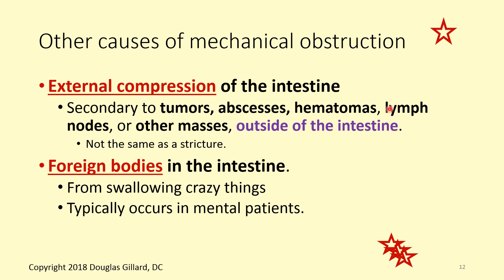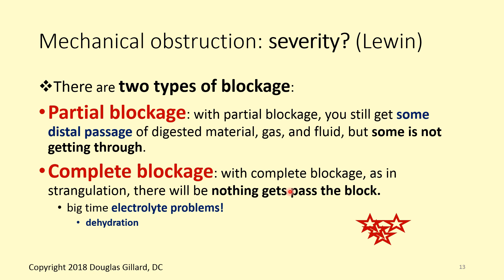Other causes include external compression — tumors, large lymph nodes from Hodgkin's disease, abscesses, or hematomas pressing into the wall of the intestine from the outside. Foreign bodies such as swallowed objects like LEGOs or quarters can physically block the intestine — still a mechanical obstruction. Regarding severity, there's a partial block, where the lumen isn't completely blocked, and a complete block, where nothing gets through. The more blockage there is, the more serious the problem.